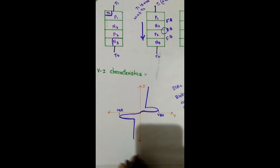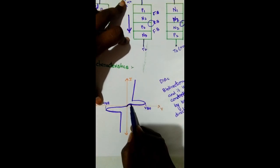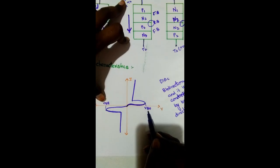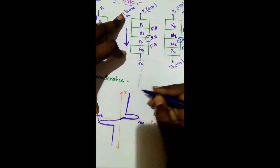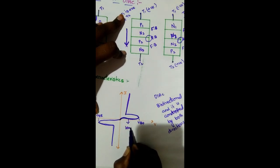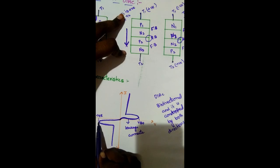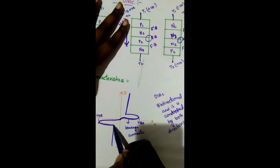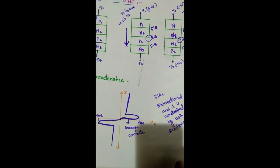Now we are going to discuss about VI characteristics. Only a small amount of current flows initially; when the breakover voltage occurs, the DIAC starts conducting. These small currents are called leakage currents. In reverse bias, behavior is the same but in the reverse direction.